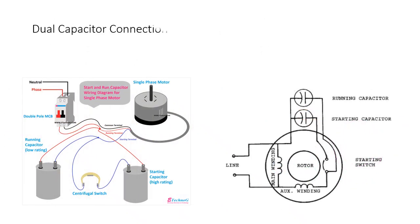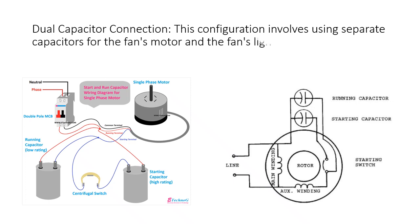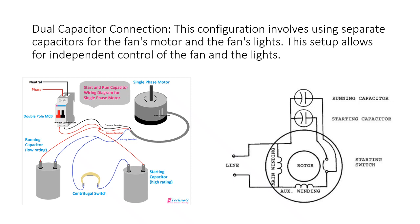Dual Capacitor Connection: This configuration involves using separate capacitors for the fan's motor and the fan's lights. This setup allows for independent control of the fan and the lights.